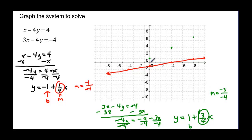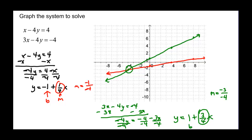So that tells me to go down three and over four to the left, and down three and over four again. Now you probably realize that the point I graphed before was actually the point of intersection, but I wanted to be able to draw the line. There's our point of intersection, and that point looks like negative four in the x direction and negative two in the y direction.